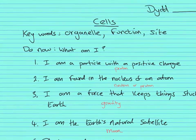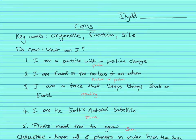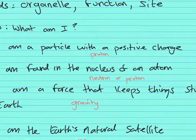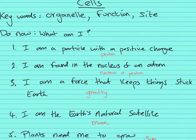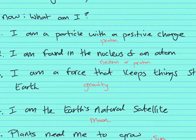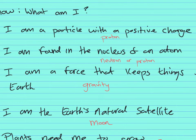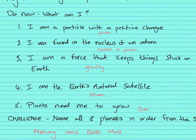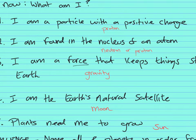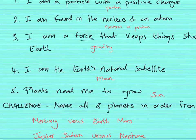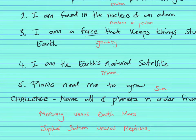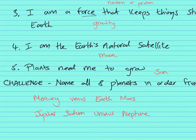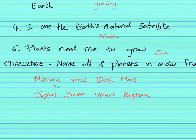Here are the answers. A particle with a positive charge is a proton. Found in the nucleus of an atom — you could have said neutron or proton, as both are found in the nucleus. A force that keeps things stuck to Earth is gravity. The Earth's natural satellite is the moon. Plants need the sun to grow. The planets in order: Mercury, Venus, Earth, Mars, Jupiter, Saturn, Uranus, Neptune — 'My Very Easy Method Just Speeds Up Naming Planets.' Pluto used to be a planet.